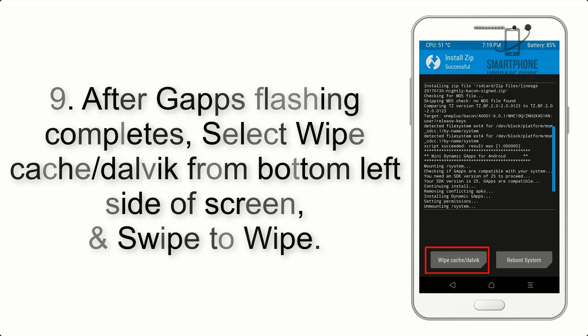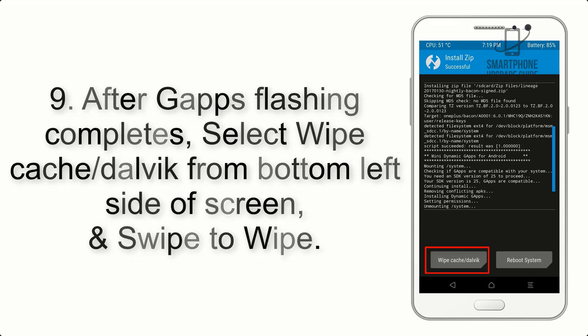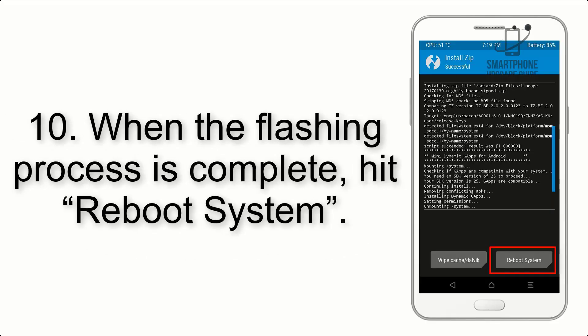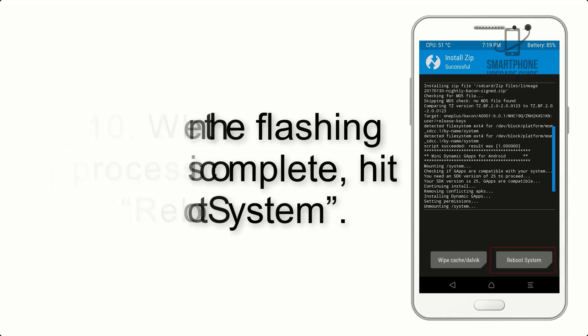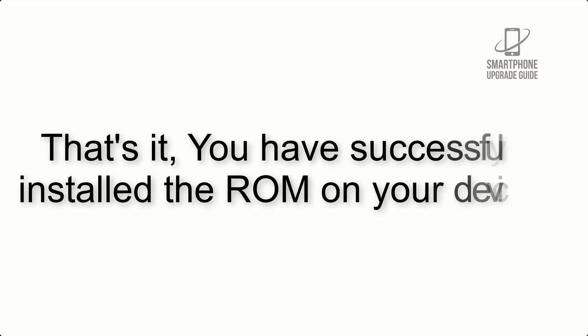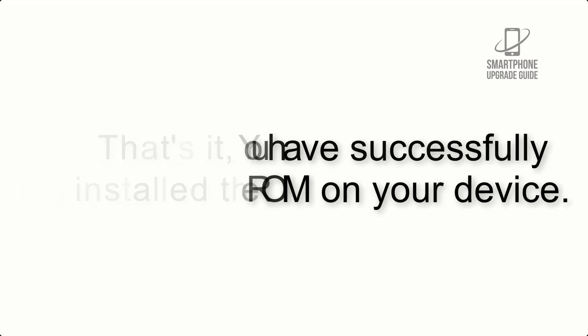Step 9: After GApps flashing completes, select Wipe Cache and Dalvik from the bottom left side of the screen and swipe to wipe. Step 10: When the flashing process is complete, hit Reboot System. That's it — you have successfully installed the ROM on your device.